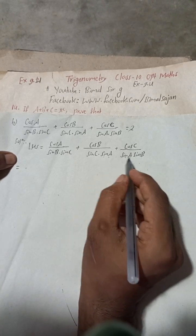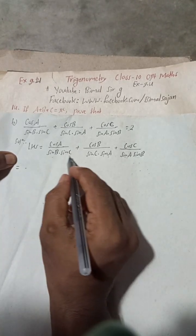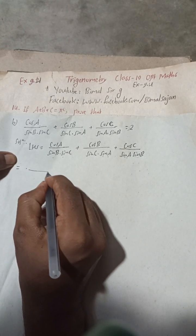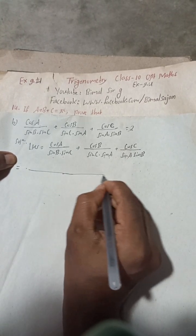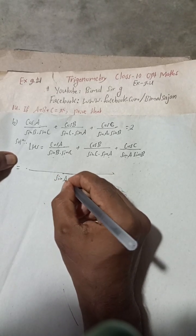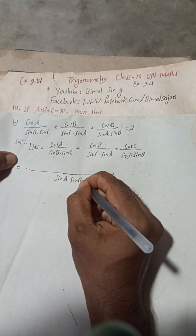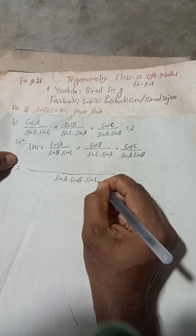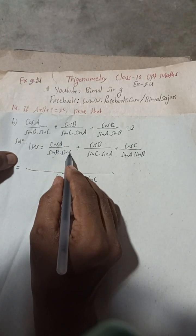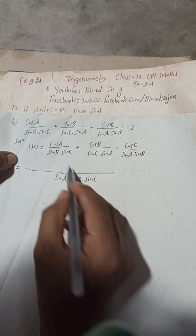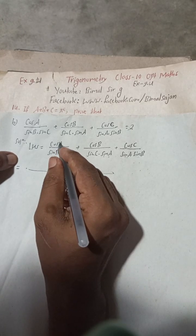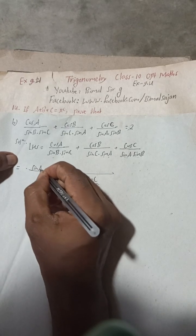We have sin A, sin B, and sin C. We can take sin A · sin B · sin C common. In the first term there is already sin B · sin C, so we need sin A — multiply by sin A to get sin A there.